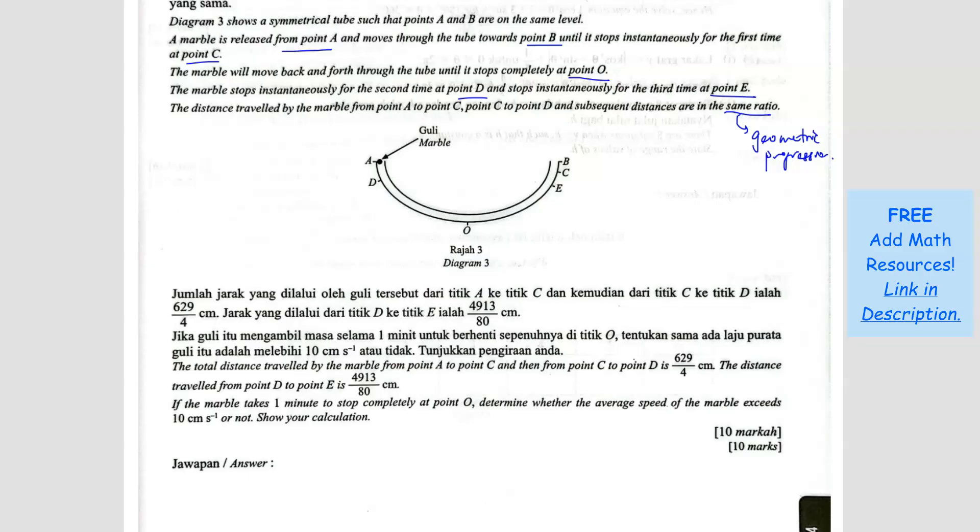Now let's see what is given to us. The total distance travelled by the marble from point A to point C, and then C to D is 629 over 4. So we know that T1 is the first, from A to C, and C to D is the second swing. So T1 plus T2, or S2, equals 629 over 4. The distance travelled from point D to E, the third term, is 4913 over 80.